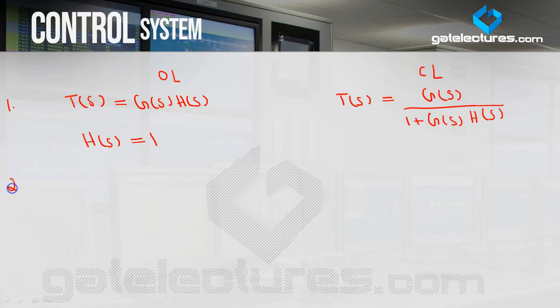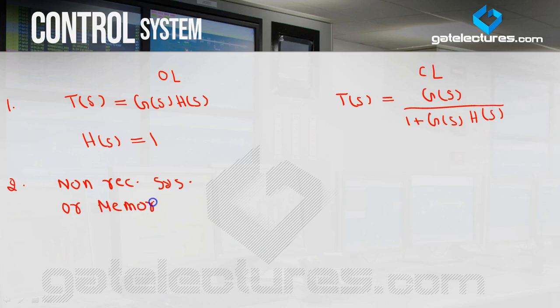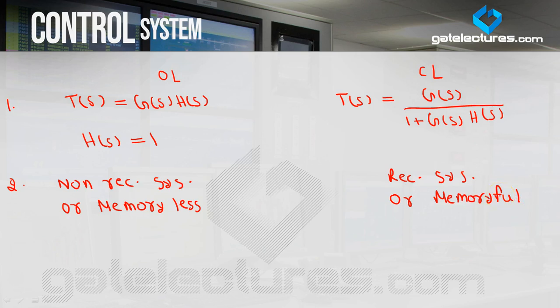The second difference: the open loop system is also called a non-recursive system, or in simple language, a memory-less system. Similarly, the closed loop system is a recursive system, or in simple language, a memory-full system. Closed loop is memory-full because there is feedback, and open loop is memory-less because feedback is not connected — it is present but not connected.